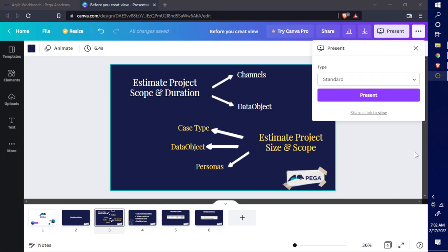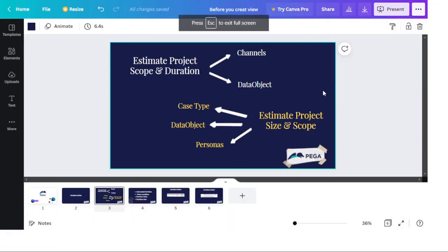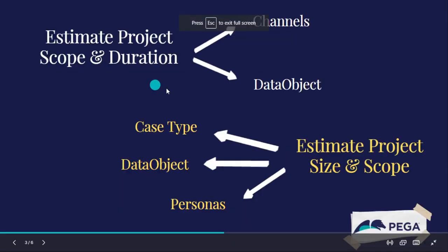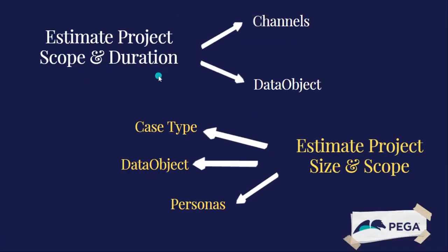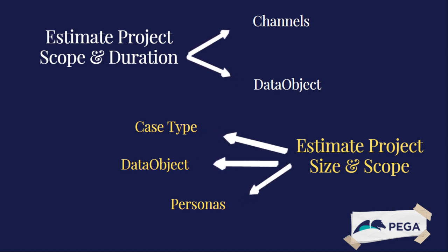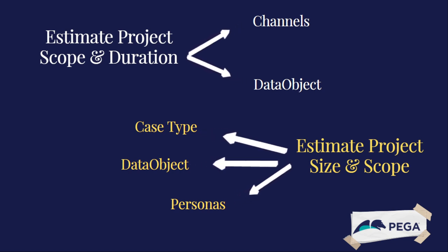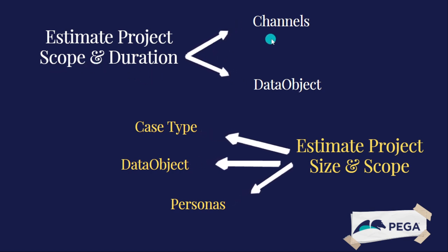In this video, let's see how to estimate project scope and duration in Pega. There are two assets assigned to a release and used to estimate the project scope and duration in Pega: channels and data objects.